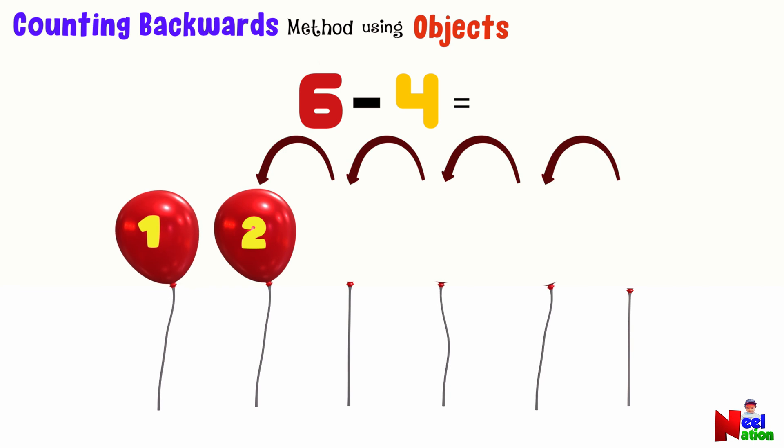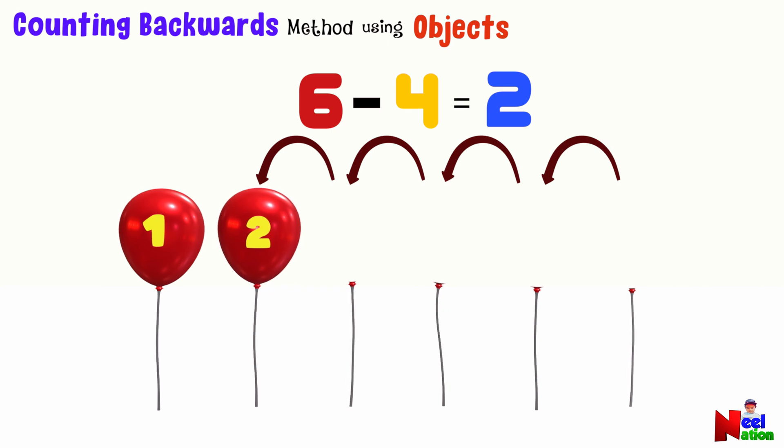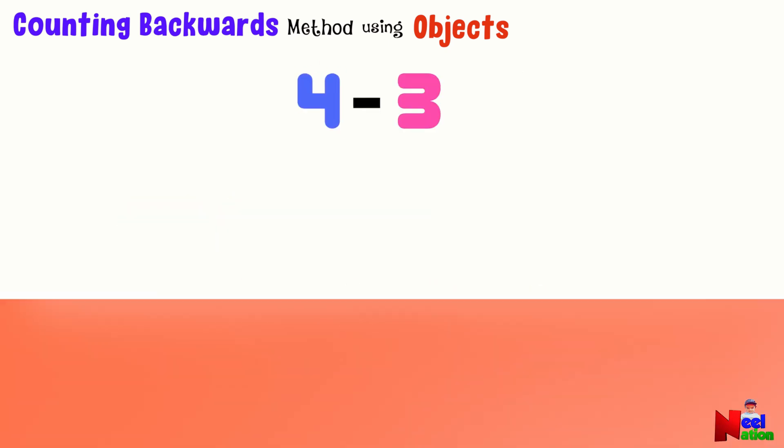So when we start with 6 balloons and take away 4, we are left with 2 balloons. That's how subtraction works when we count backwards. Next, what is 4 minus 3?